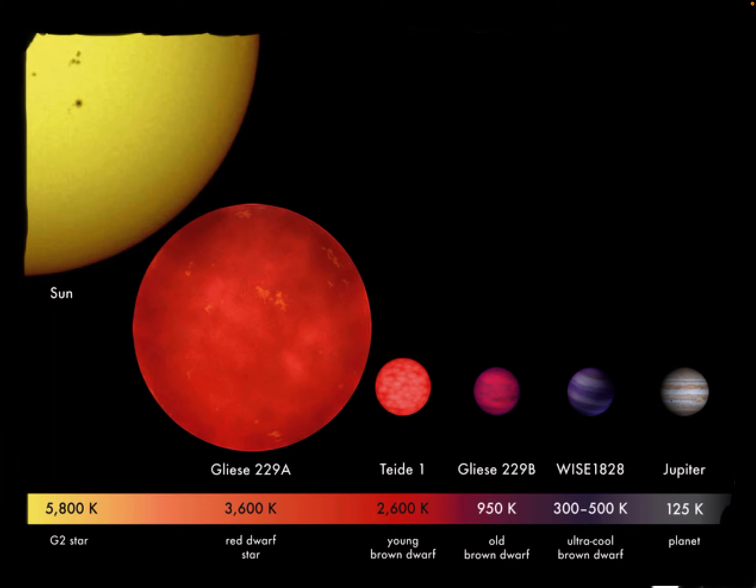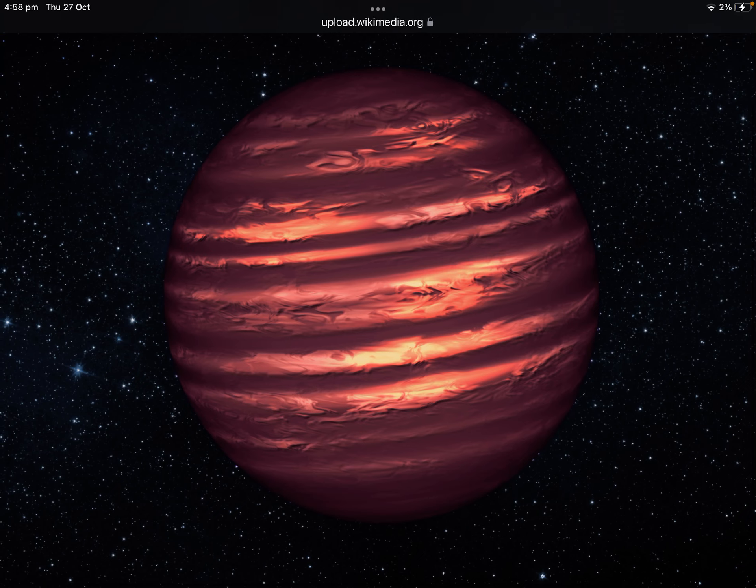Well, now you know what brown dwarves are. Their size is actually bigger than Jupiter. Of course, this picture doesn't show you that their size is bigger than Jupiter, but it actually is. Although, some brown dwarves are actually similar to Jupiter.